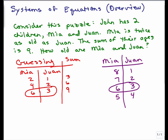So if you consider this puzzle, you might just from doing a little guessing and checking come up with a correct answer, which is Mia is 6 and Juan is 3.